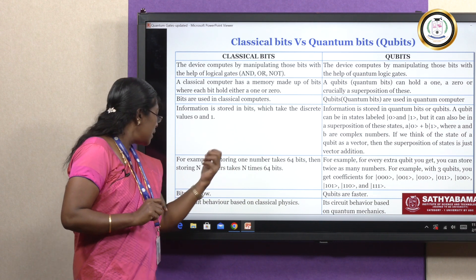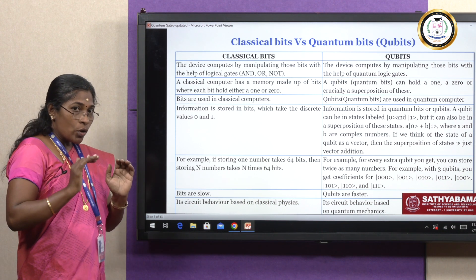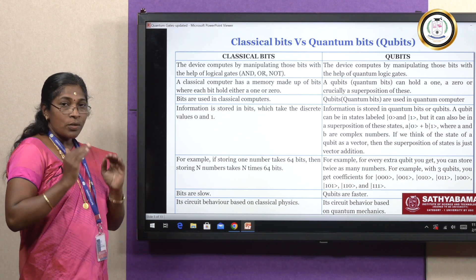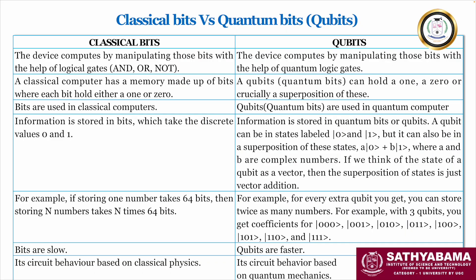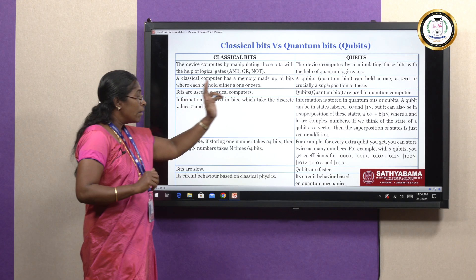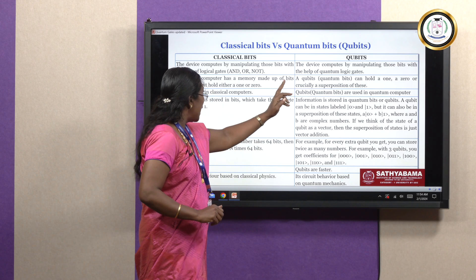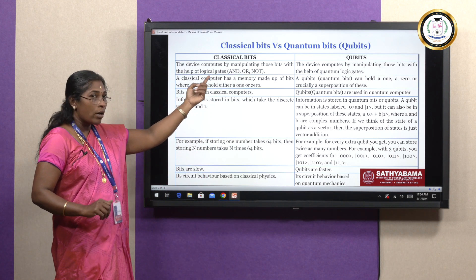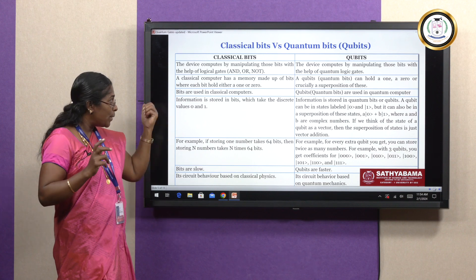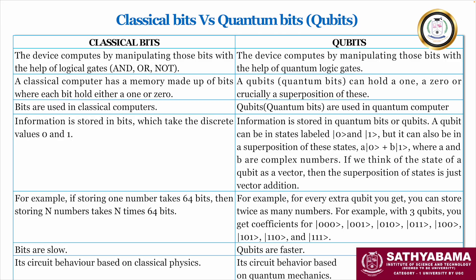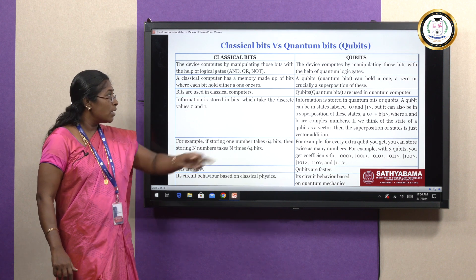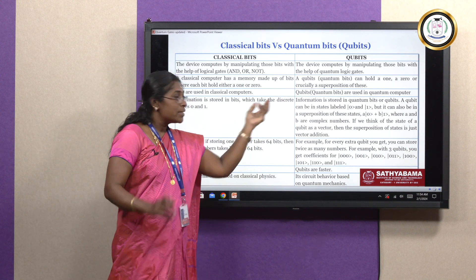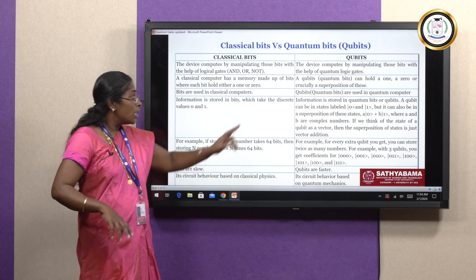Because of this, the computational speed is very slow, and when solving complicated problems it will take more time. Its circuit behavior is based on classical physics. In quantum bits, quantum logical gates are used to manipulate the qubits. Quantum bits, or qubits, can hold the values or states of 0 or 1, as well as the combination — the logical combination — of 0 and 1.